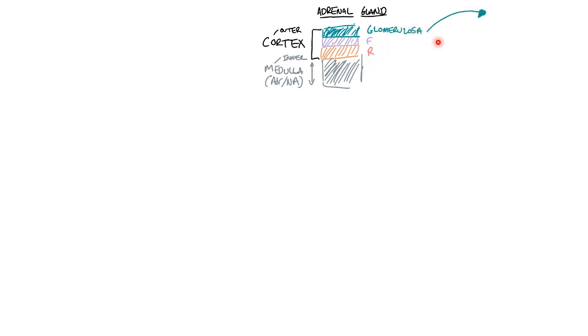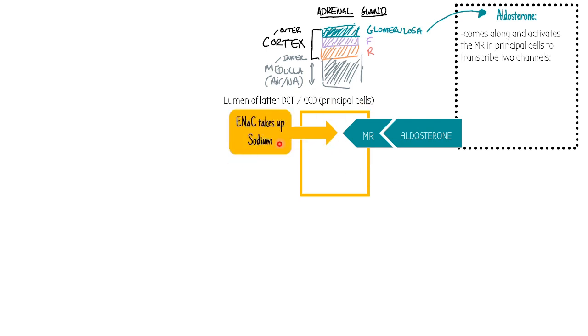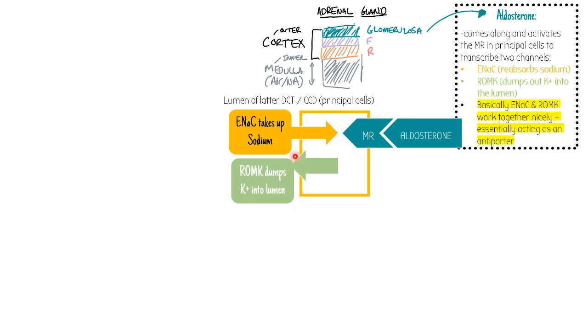The one we're focusing on is glomerulosa, so this makes aldosterone. Basically, it's a hormone that goes along to the principal cells in the collecting duct and binds on the basolateral side, the side with the blood, to the mineralocorticoid receptor. Upon binding, it causes transcription of two channels: ENAC, which takes up sodium, and ROMK channel, which dumps K plus out. The ENAC and ROMK are happily married together; they work as a couple, essentially acting as an antiporter.